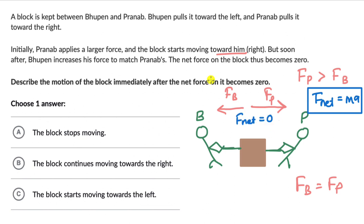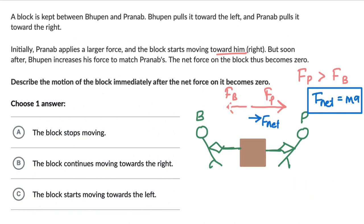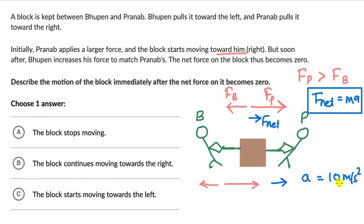We might think that when Fnet becomes zero the block stops moving. But the block was already moving to the right when the net force becomes zero — so would it really stop? Let's understand that by bringing in some numbers. In the initial state, when Fp was greater than Fb, there was a net force to the right, causing an acceleration — let's say 10 meters per second squared.